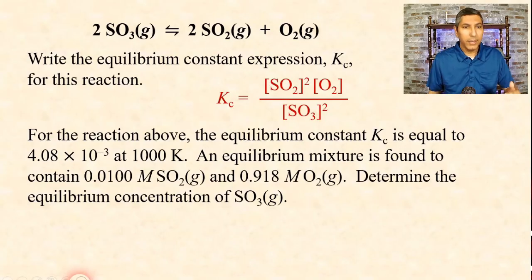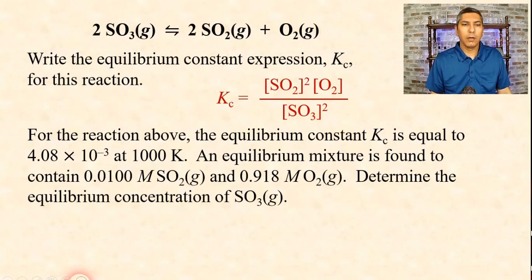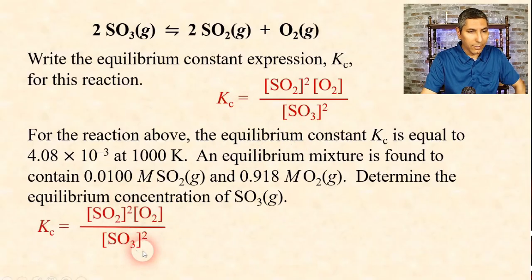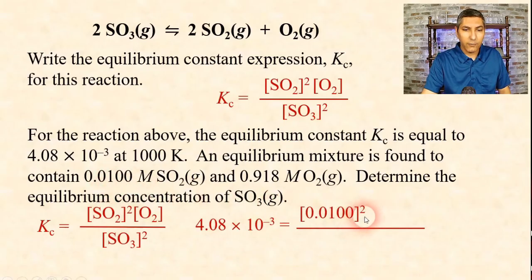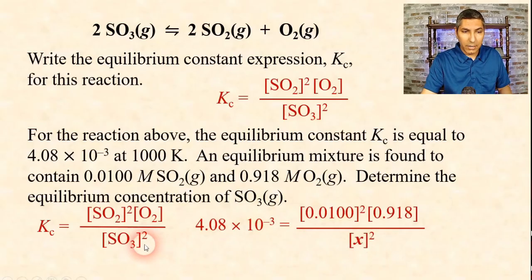For the reaction above, the equilibrium constant Kc equals 4.08 times 10 to the negative third at 1000 kelvins. An equilibrium mixture contains 0.0100 molar sulfur dioxide gas and 0.918 molar oxygen gas. We need to determine the equilibrium concentration of sulfur trioxide gas. We take these values and plug them in. Kc is 4.08 times 10 to the negative third. SO2 is 0.0100 molar, squared. O2 is 0.918 molar. The concentration of SO3 is unknown — call it X — and it's squared in the expression.